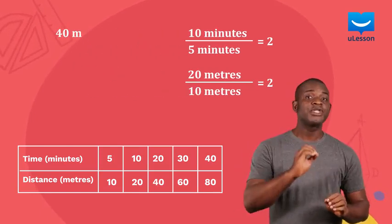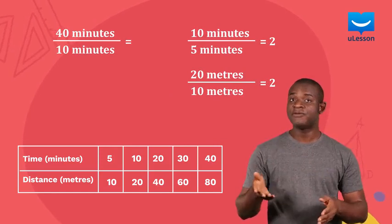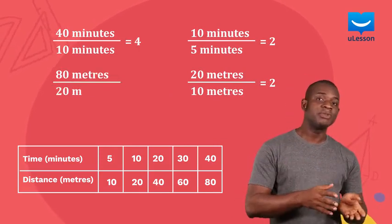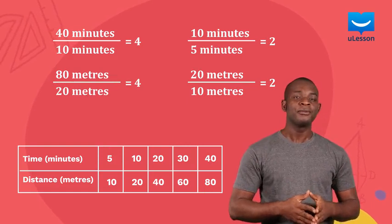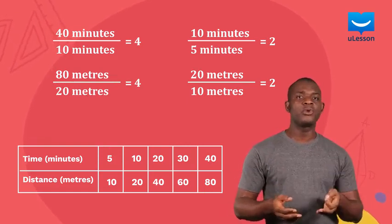Also, 40 minutes over 10 minutes is 4, while 80 meters over 20 meters is also 4. In each example, the ratios are equal.